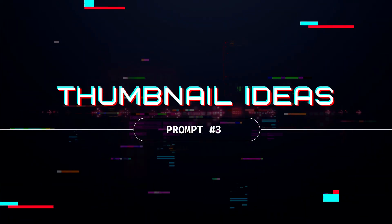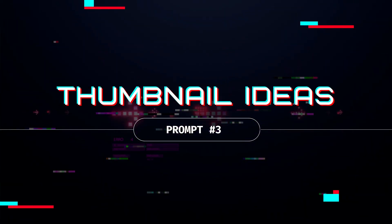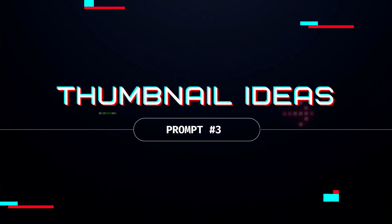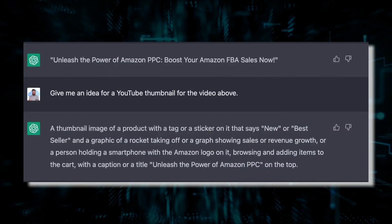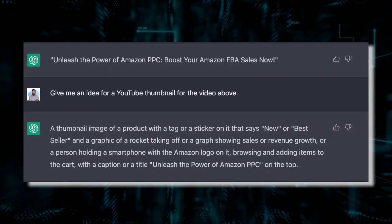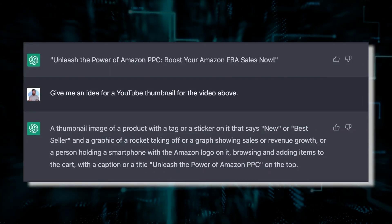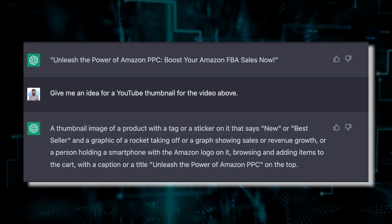Moving on to number three: thumbnail design ideas. ChatGPT doesn't do design or create any sort of media yet, but what it can do is give you ideas for what it should look like. So if I have a YouTube video topic, I can ask it to give me a thumbnail design. In this one I said, 'Give me an idea for a YouTube thumbnail for the video above.'